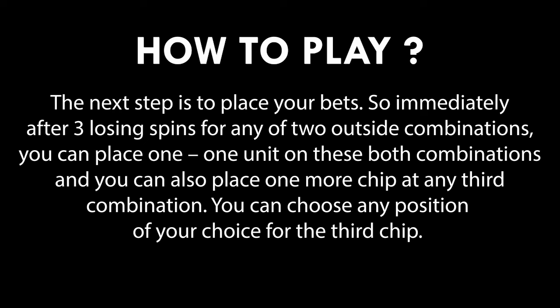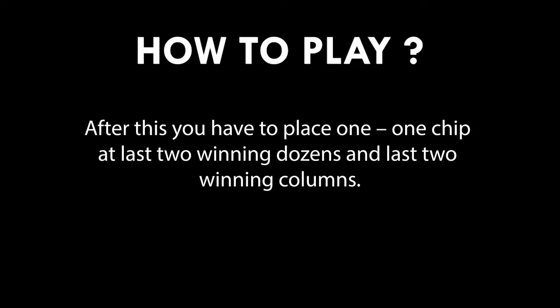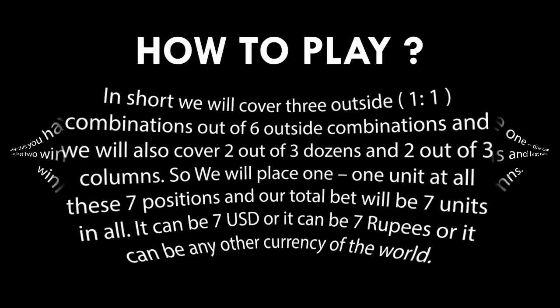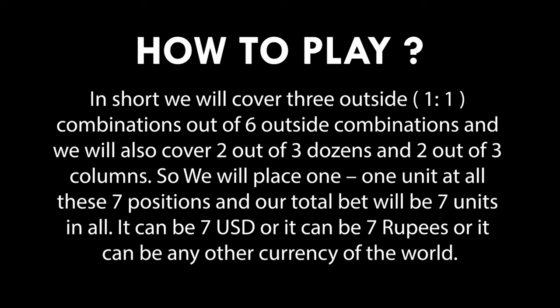You must have three losing spins for any two outside combinations before starting to play under this method. The next step is to place your bets. Immediately after three losing spins for any two outside combinations, place one unit on both those combinations, and also place one more chip at any third combination of your choice. After this, place one chip each at the last two winning dozens and last two winning columns. In short, we cover three outside one-to-one combinations out of six, plus two out of three dozens and two out of three columns — seven units total. It can be seven US dollars, seven rupees, or any other currency.